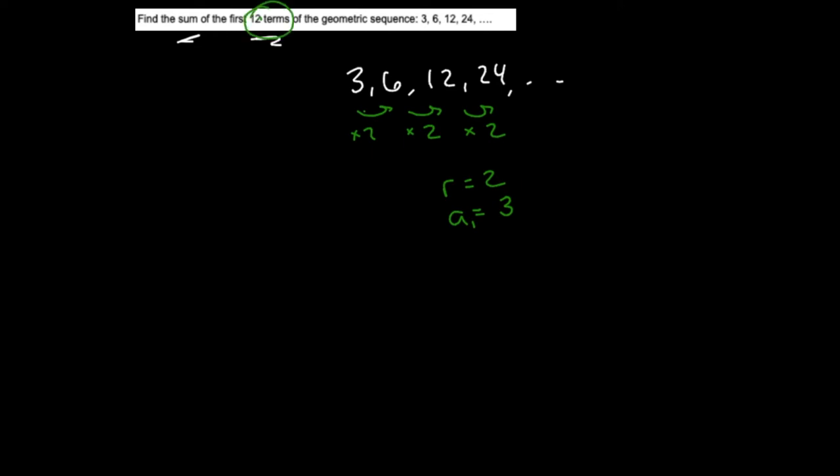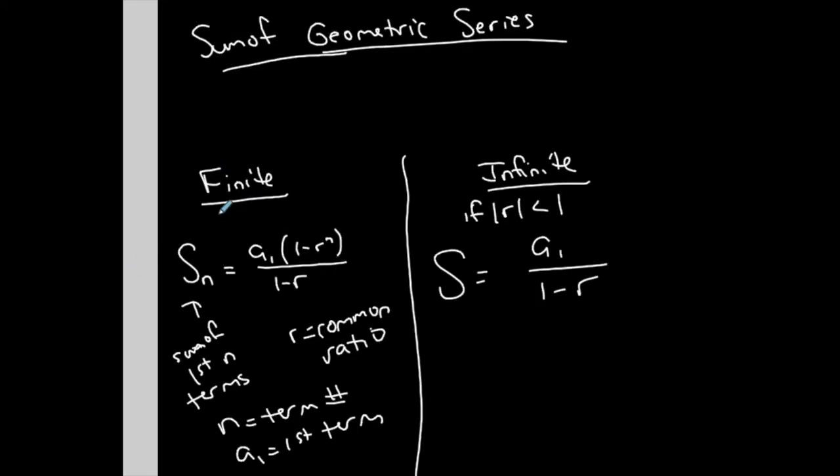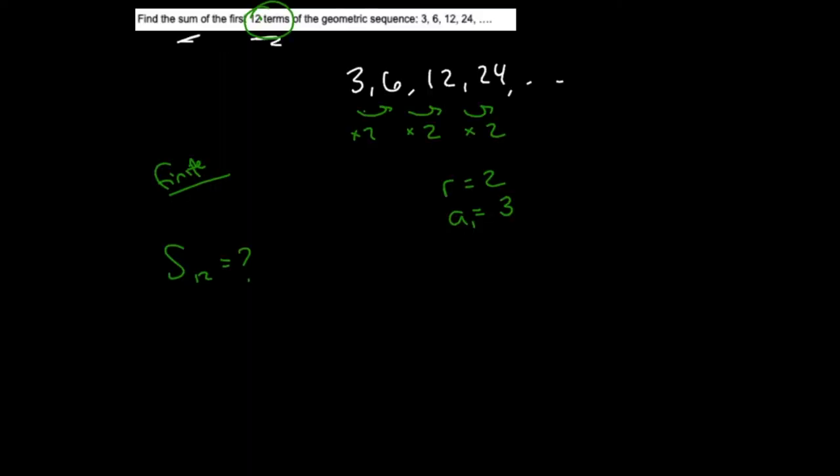So if I want the sum of the first 12 terms, what I want is s12. So I'm doing the sum of a finite geometric series. I want the first 12 terms. So I want s12 for a finite geometric series. I want this: a1 times 1 minus r to the n over 1 minus r. So a1 we determine is 3, r is 2, and therefore the n is equal to 12 because I want the sum of the first 12 terms.